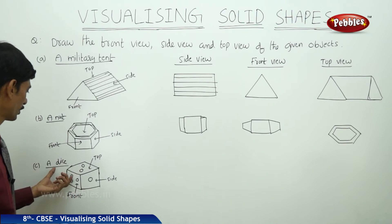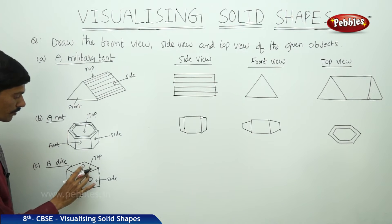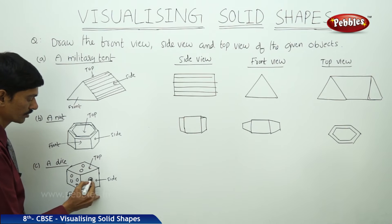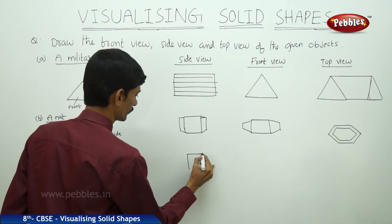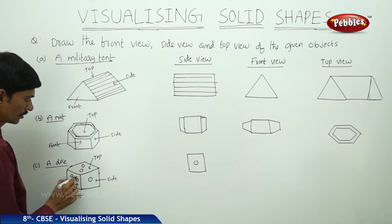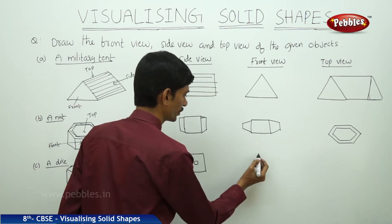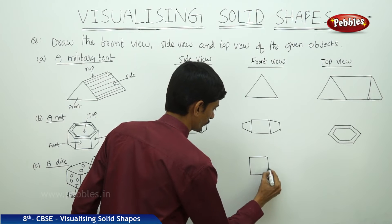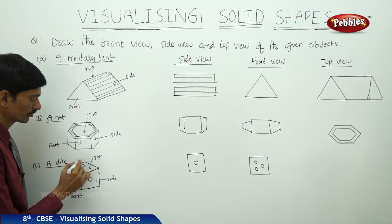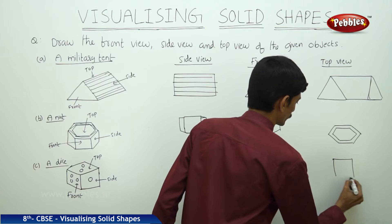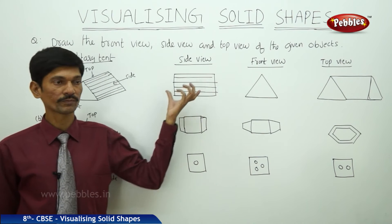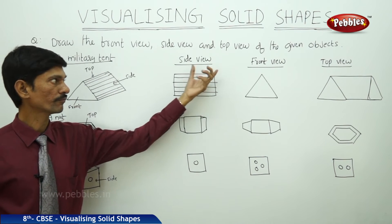Next are dice with holes or circles given on each face. From the side, we can observe a square with a single circle. From the front, it is also a square shape with three circles on the face. From the top, it is a square with two circles. For any solid shape given, we can show its side view, front view, and top view.